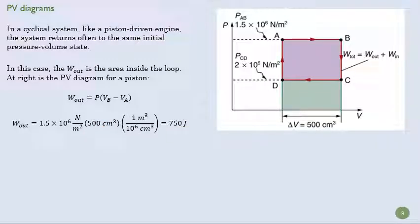And we get 750 joules. So that's the work the system is doing as it expands. Then we can figure out the work in, how much negative work is being done.